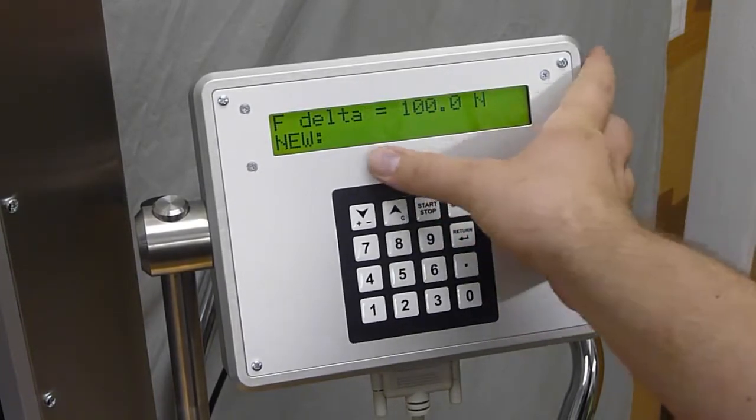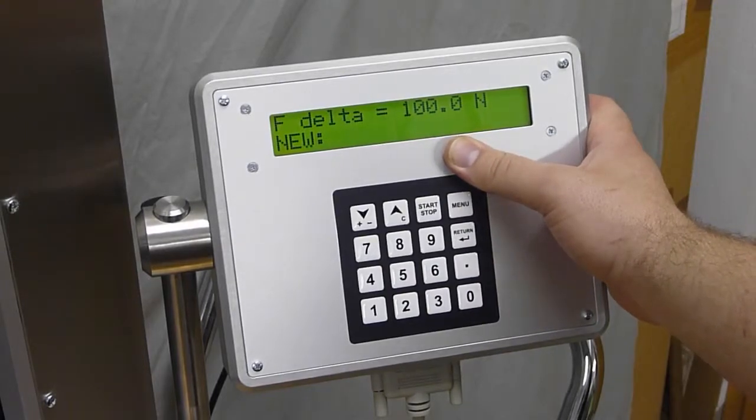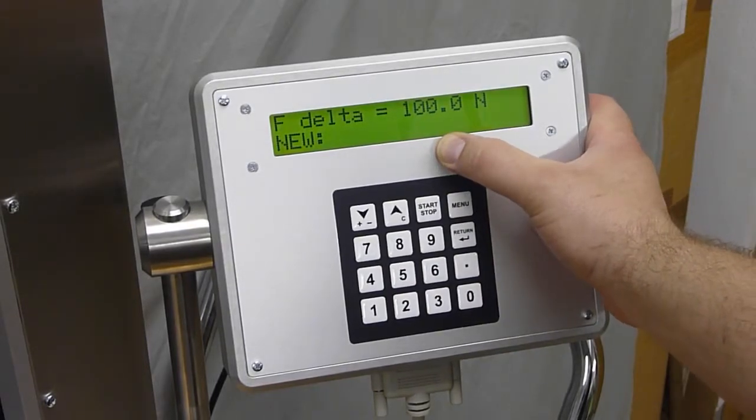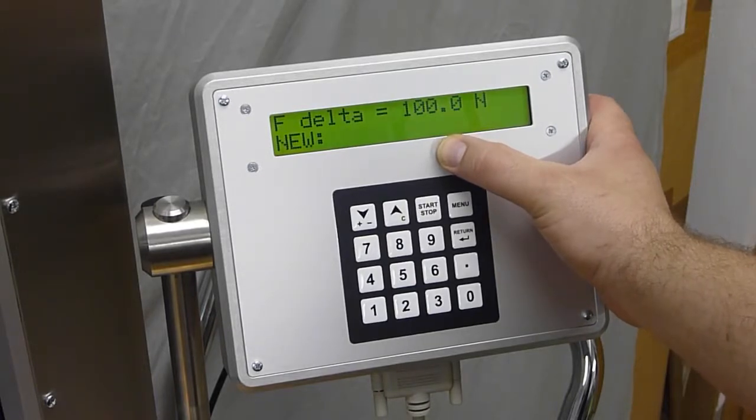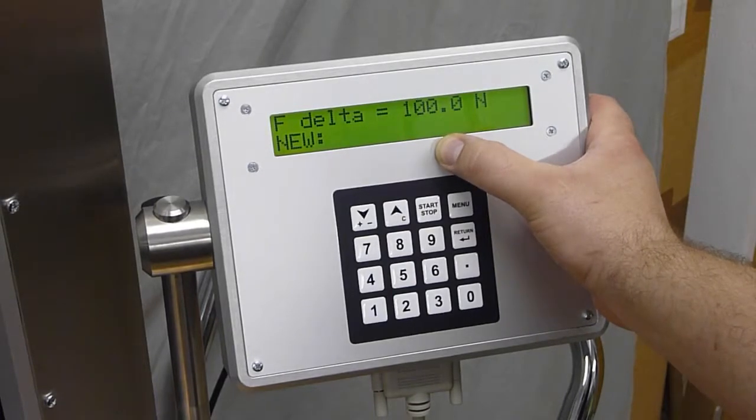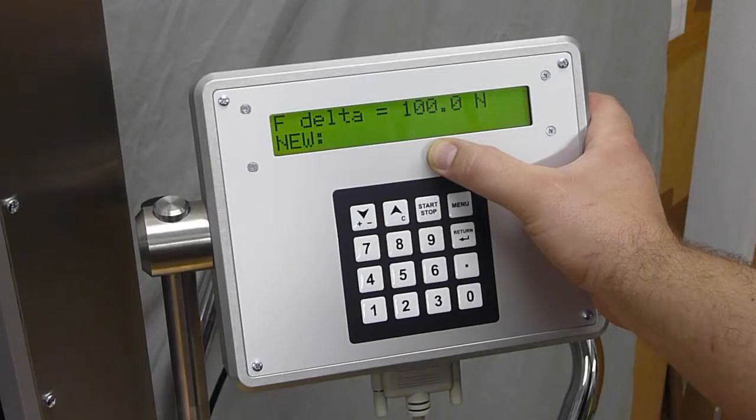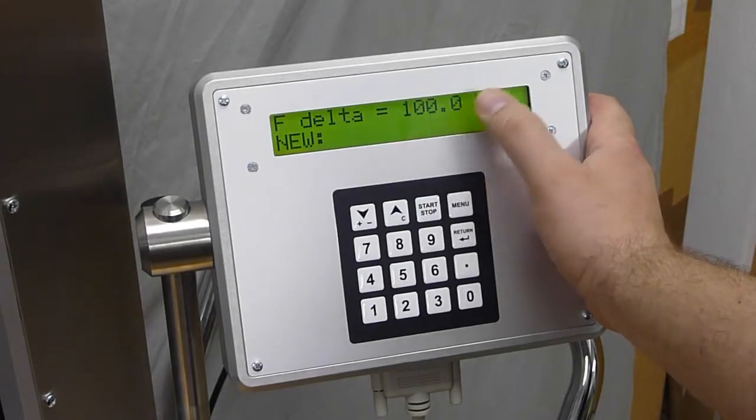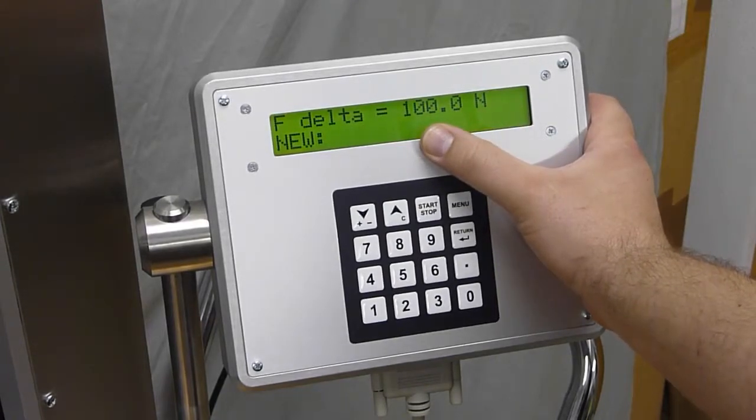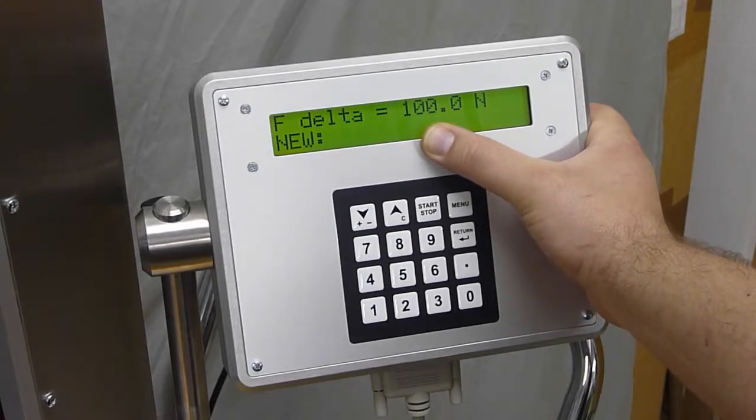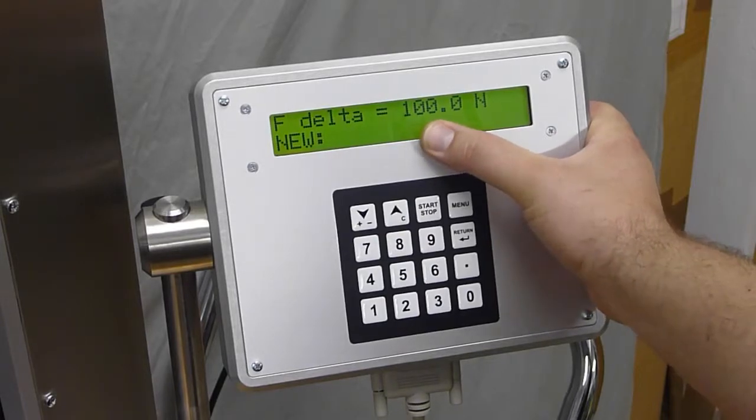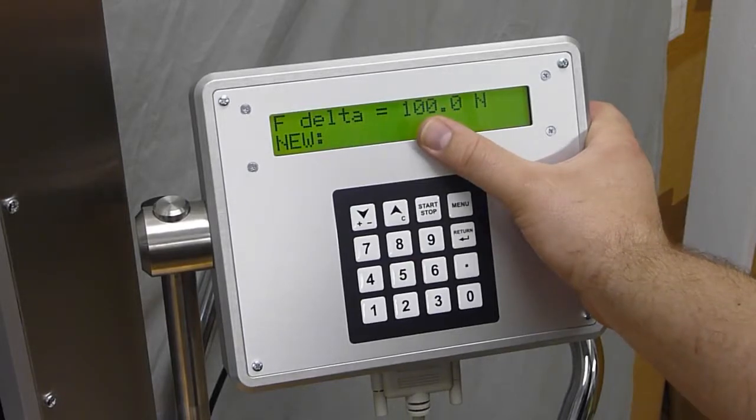F delta is the break detection system and is used for automatic detection of crash, sample rupture, or whatever happens with the sample. 100N means when it went from one measurement point to second measurement point,